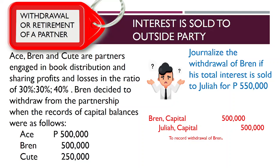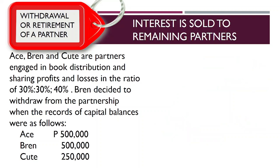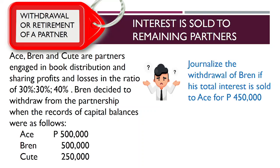Let us move on to the next topic wherein the interest is sold to the remaining partners. Using the same problem, the full interest of the withdrawing partner Brand is sold to the remaining partner Ace for $450,000. The accounting procedure is the same: debit Brand capital $500,000 and credit Ace capital $500,000.